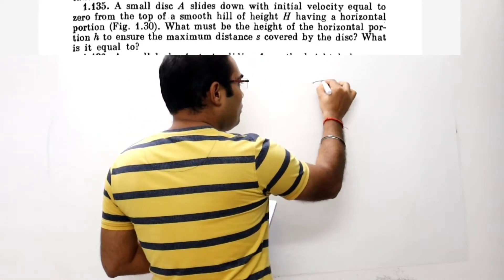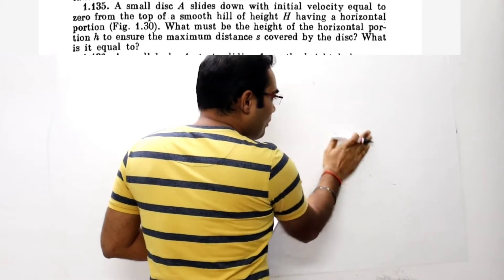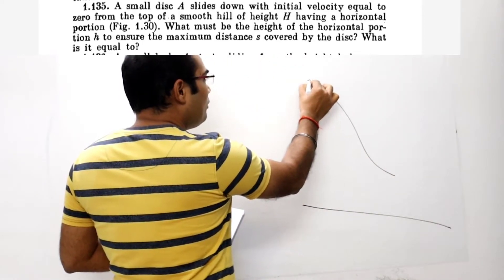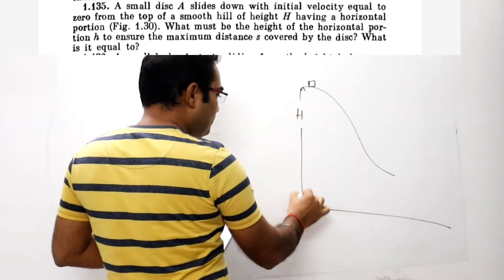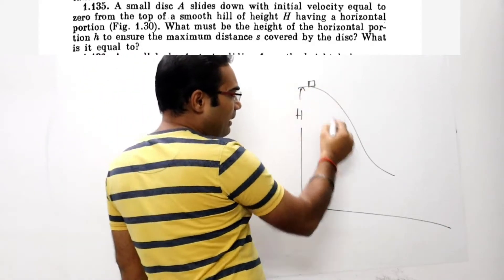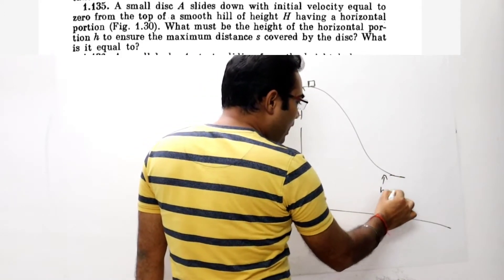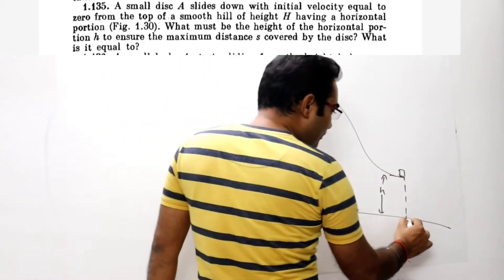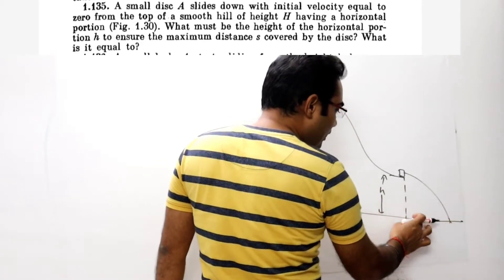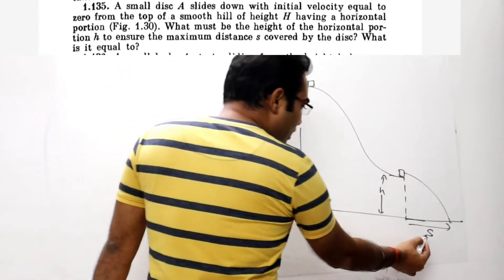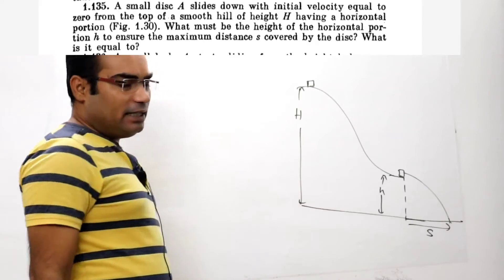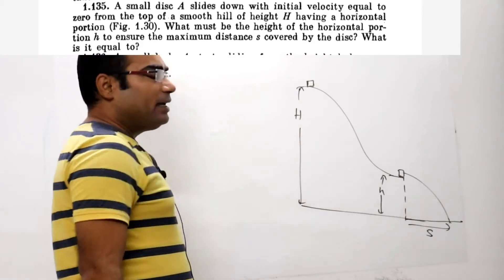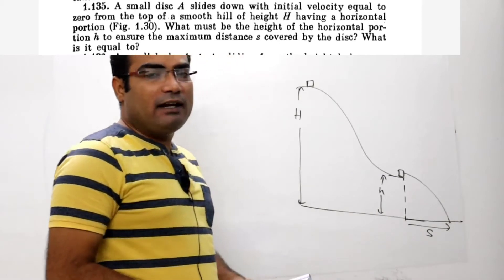एक disc को एक inclined smooth surface से गिराया जाता है। जिस height से इसको छोड़ा जाता है वो capital H दिया हुआ है, और जहाँ पे आने के बाद यह fall करेगा — air में आ जाएगा — वो small h दिया हुआ है। यह fall करके कहीं पे गिरेगा, मान लेते हैं यह S है। तो यह S maximum होने के लिए small h और capital H में क्या relation होना चाहिए? और यह S maximum का value क्या होना चाहिए?